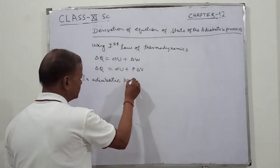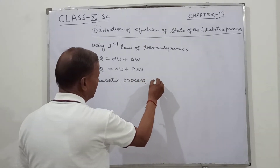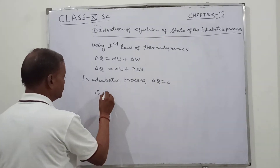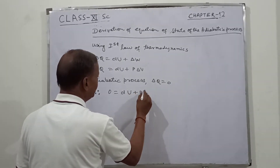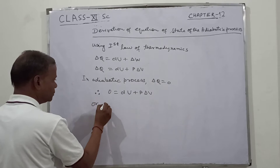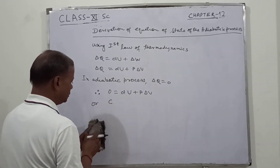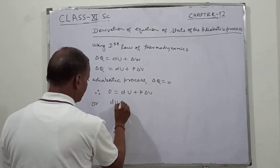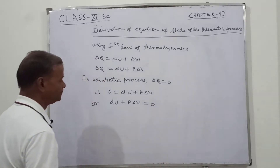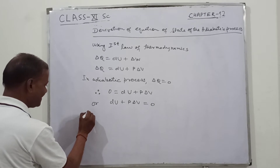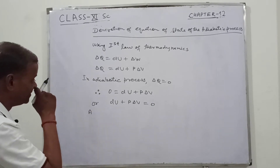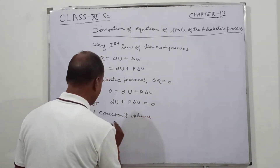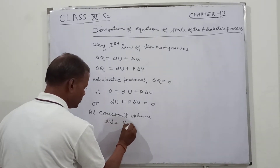In the adiabatic process, delta Q equals zero. Therefore, 0 equals dU plus P dV, which gives us dU plus P dV equals zero.